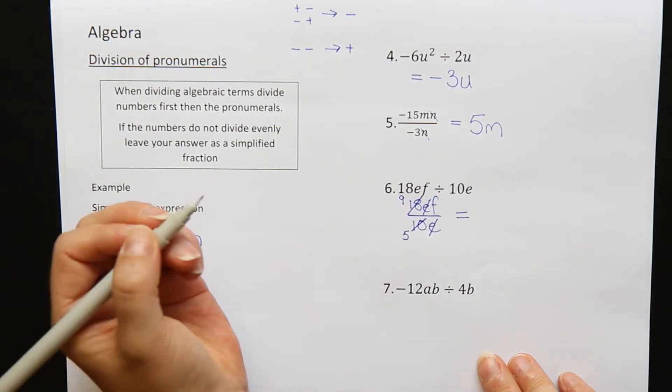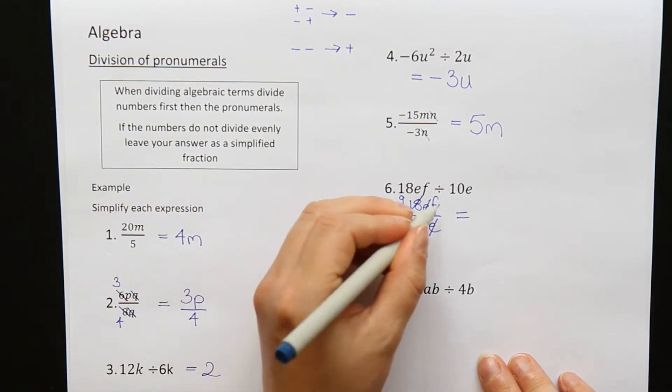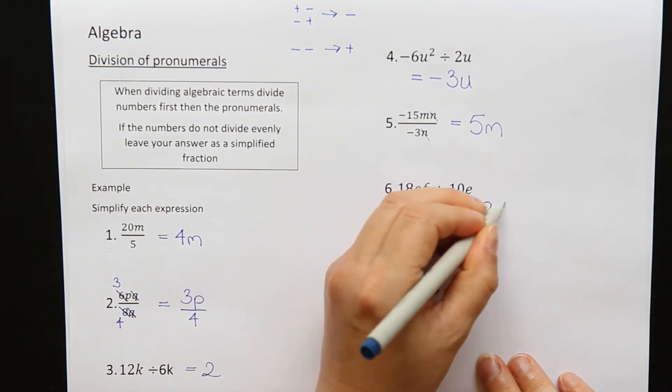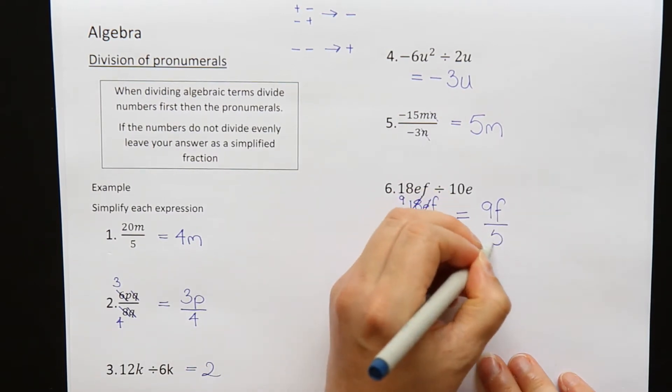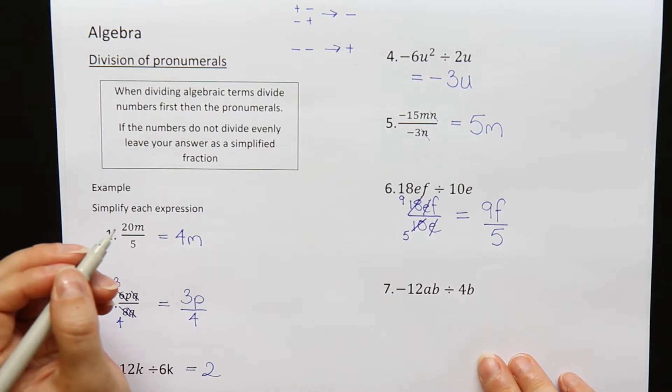So now I just write down what's left. On the top, I have a 9 and an F. On the bottom, all that's left is the number 5. 9f over 5.